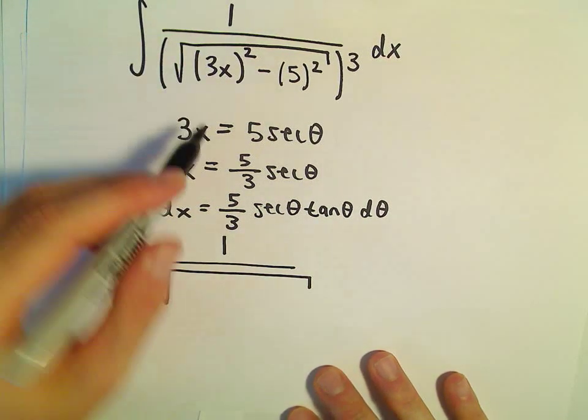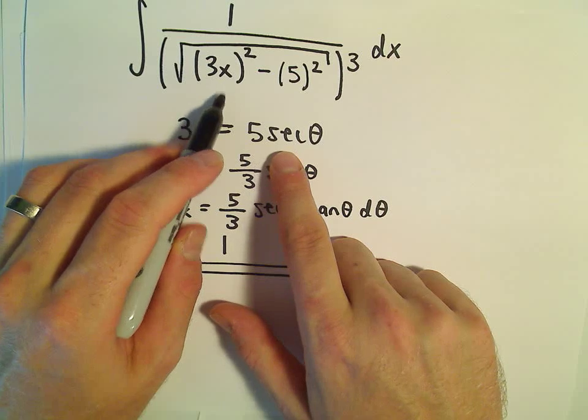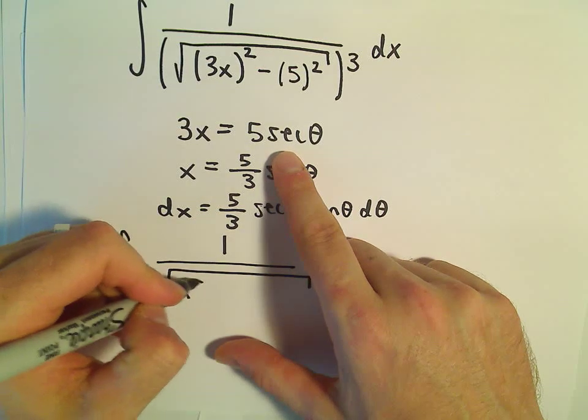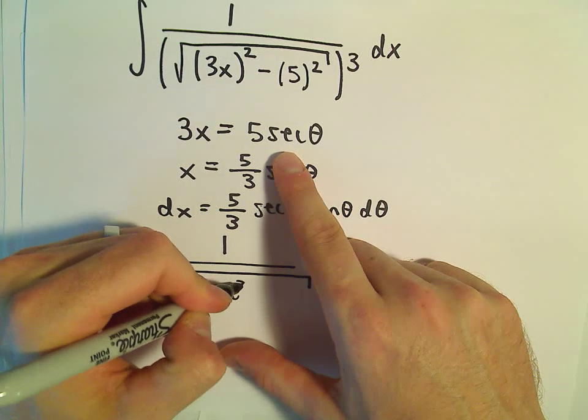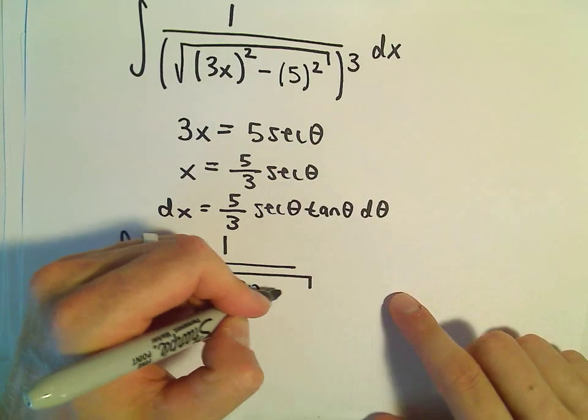So let's see, our 3x squared, instead of 3x, we're going to plug in 5 secant theta. So we would have 25 secant squared theta minus 25.